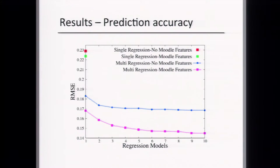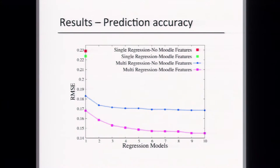Let me give you some results. This plot compares models using a root-mean-square error metric. We've normalized grades to be between zero and one, with one being a perfect grade. We're comparing the predicted grade versus the grade the student actually achieved — the smaller the error, the better.